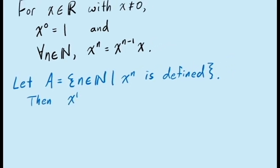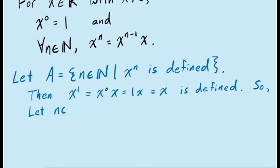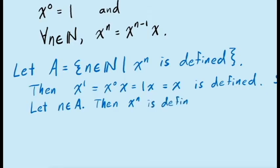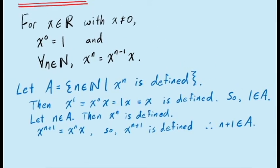This is because x to the power 1 is defined to be x to the power 0 times x, which is 1 times x, and so x to the power 1 is equal to x. We can then say if n is an element in the set A, meaning x to the power n is defined, then we get x to the power n plus 1 is equal to x to the power n times x, which, if x to the power n is defined, then means x to the power n plus 1 is defined as well. And so this shows that the set A is an inductive set.